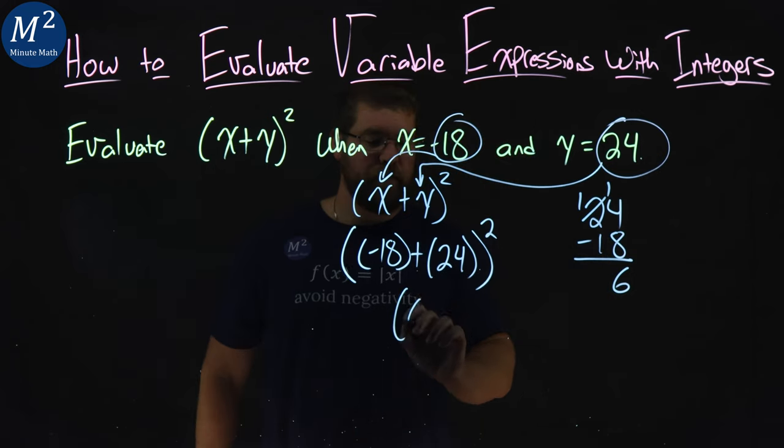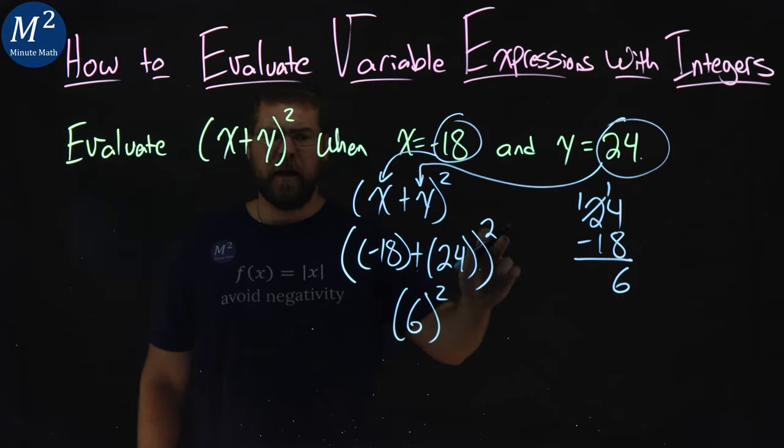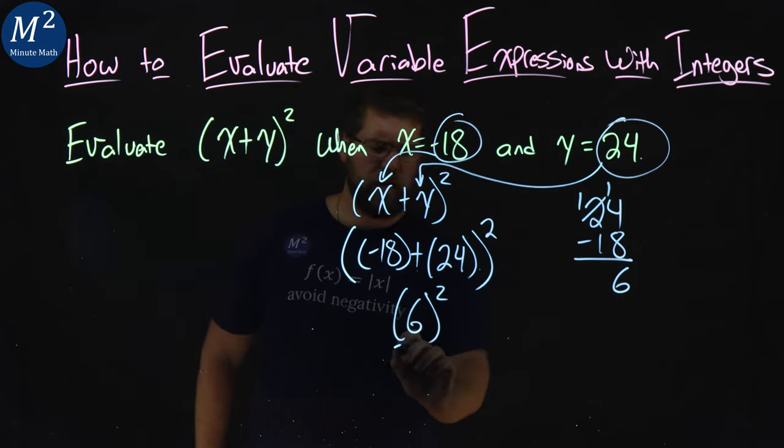So negative 18 plus 24 is 6, and the squared is still on the outside. Now, 6 squared is 6 times 6, which is 36.